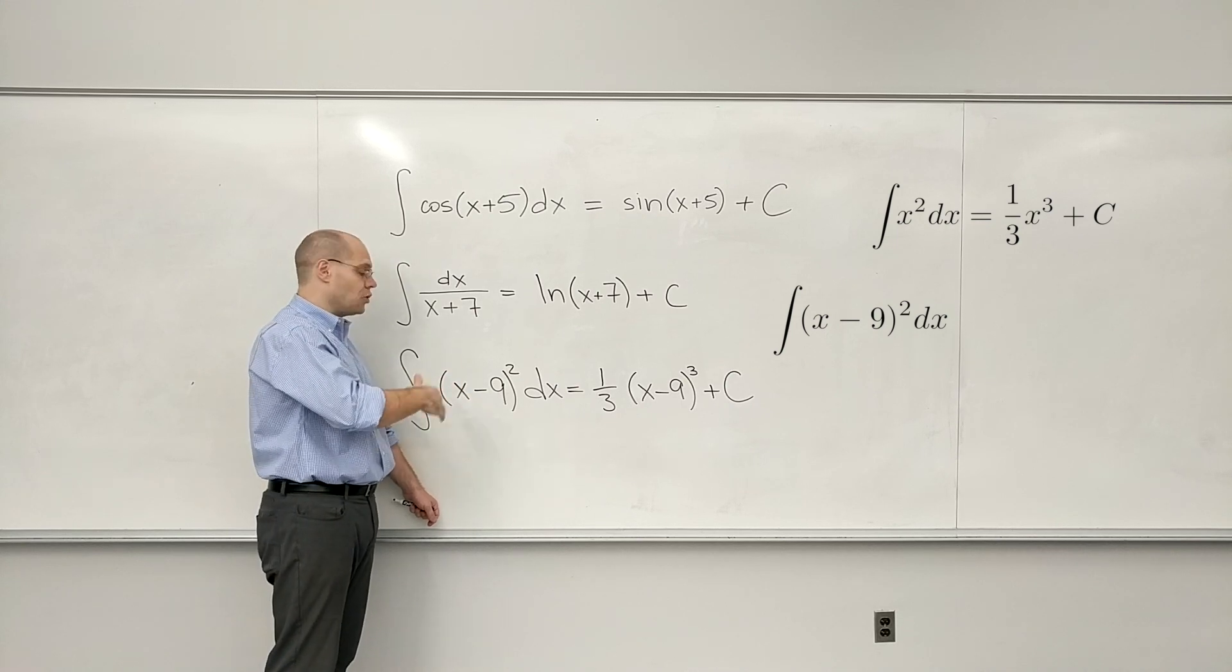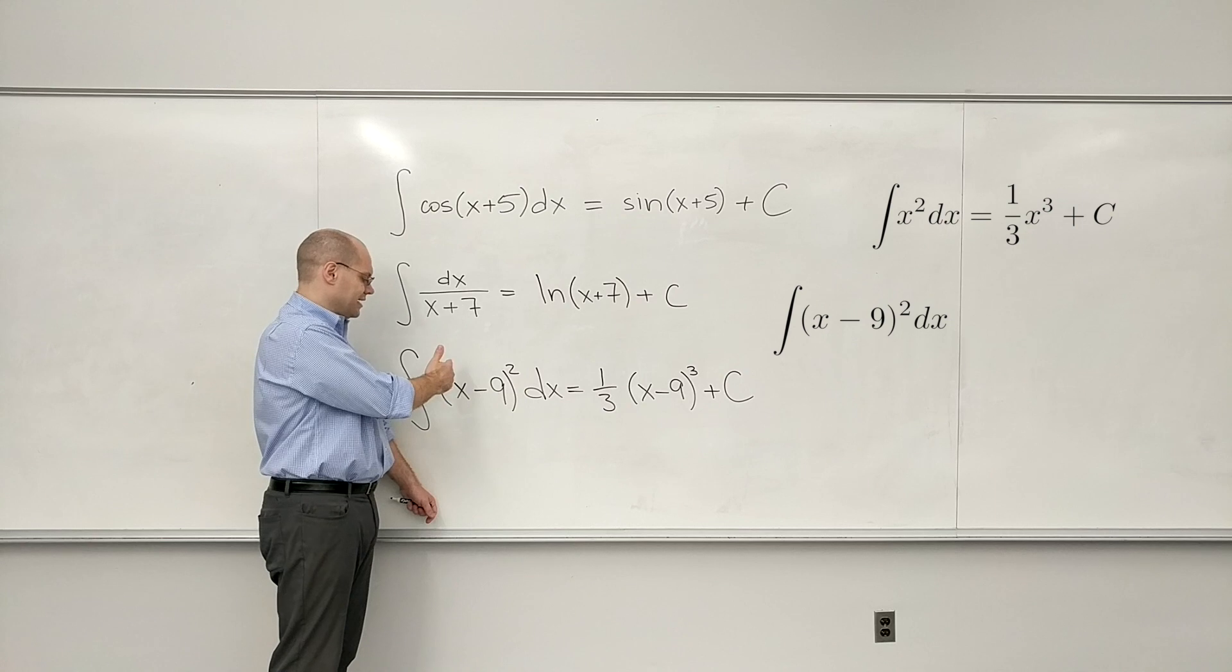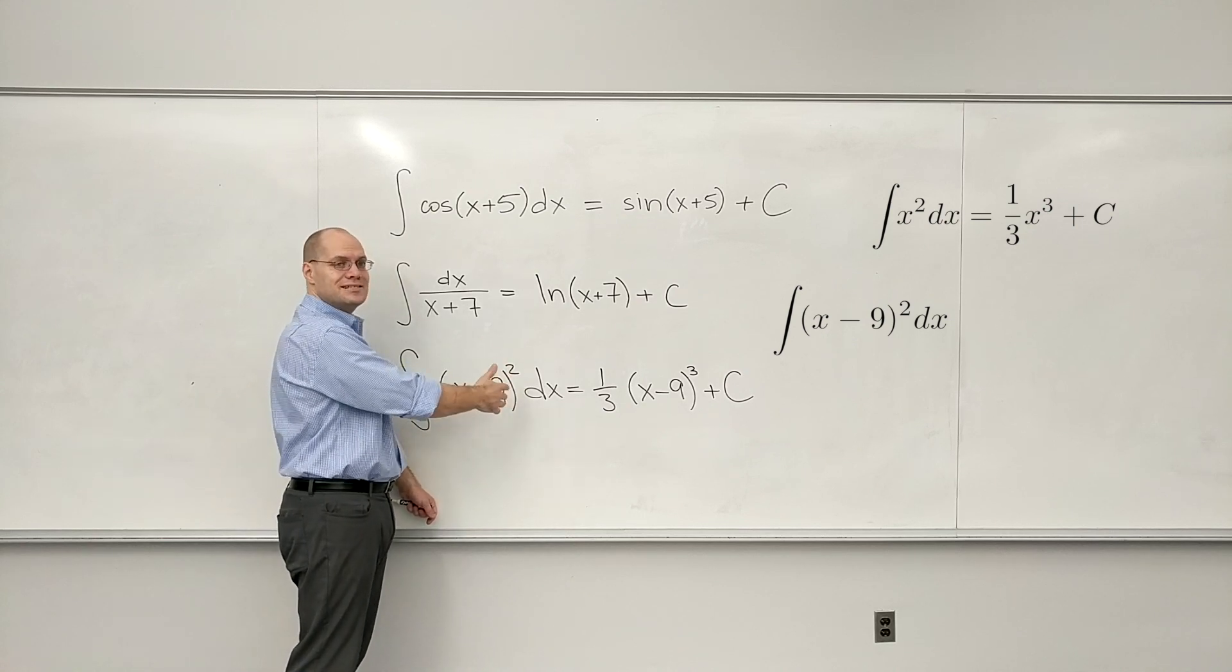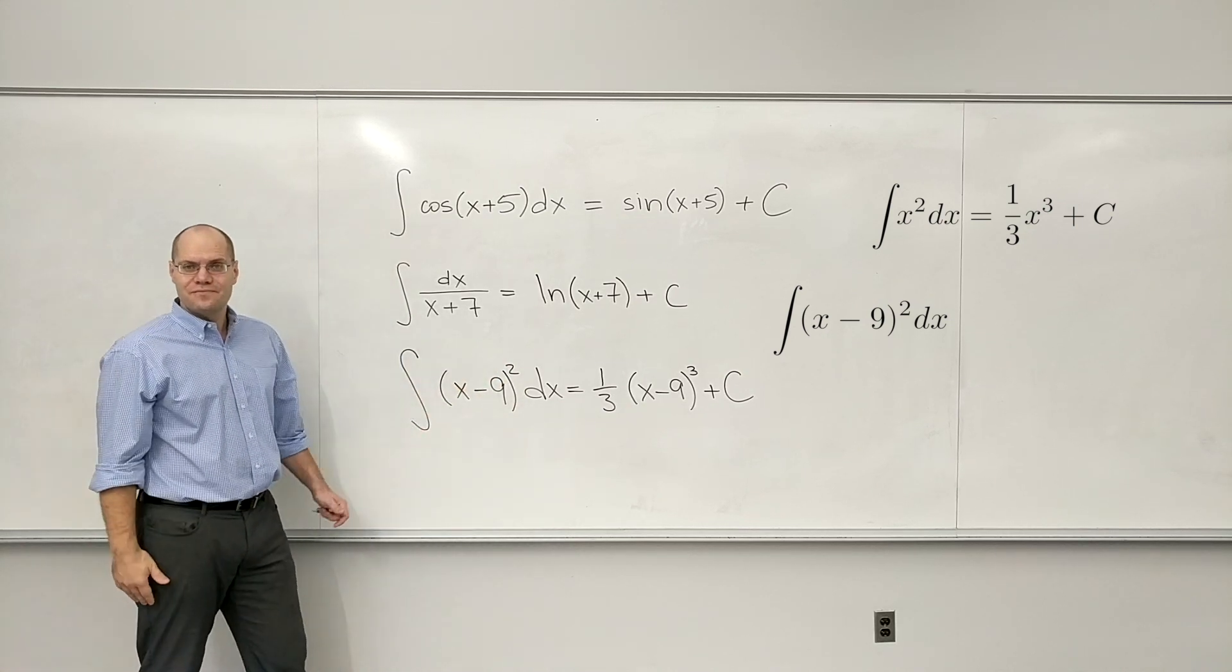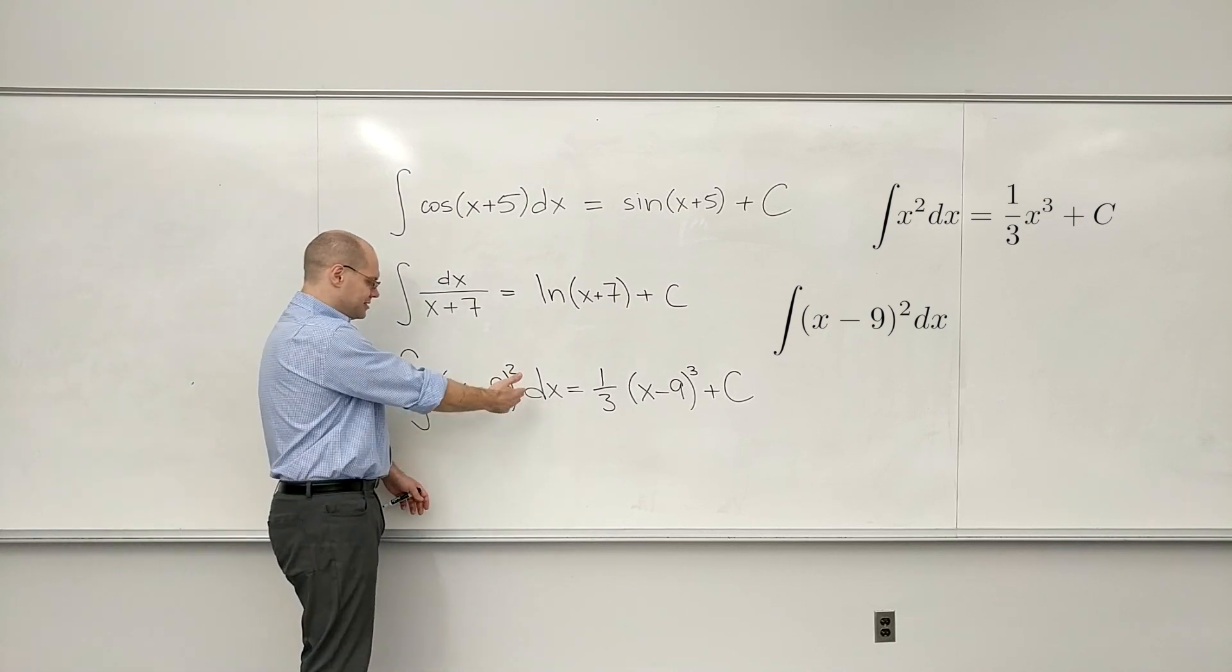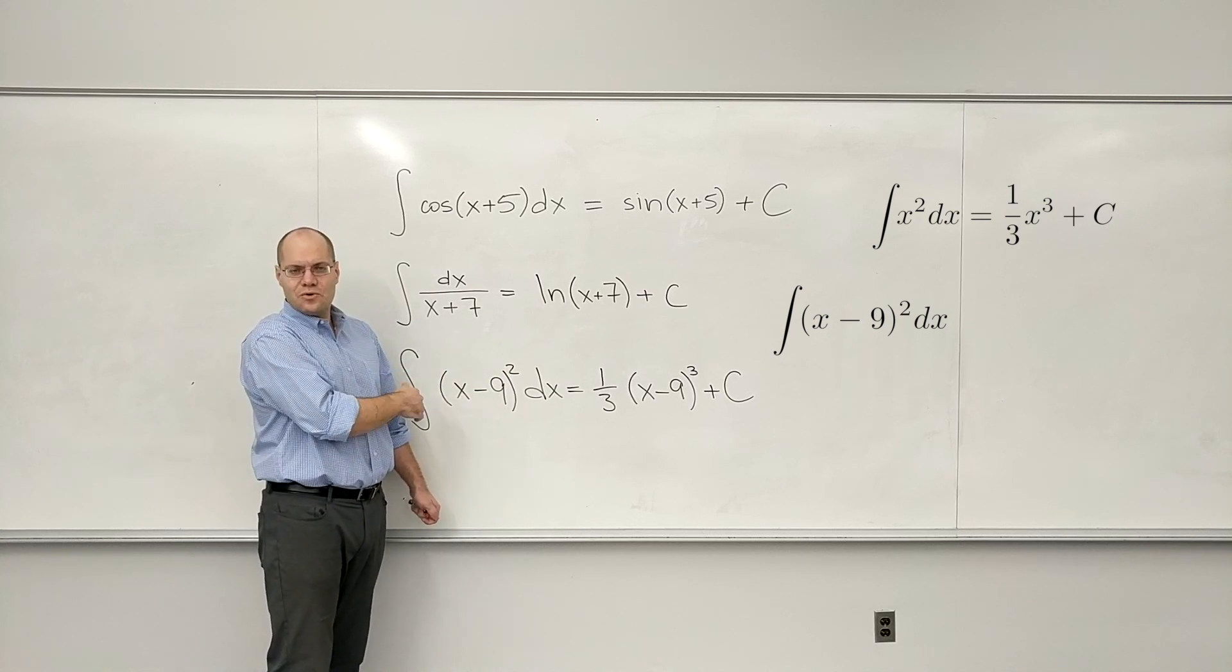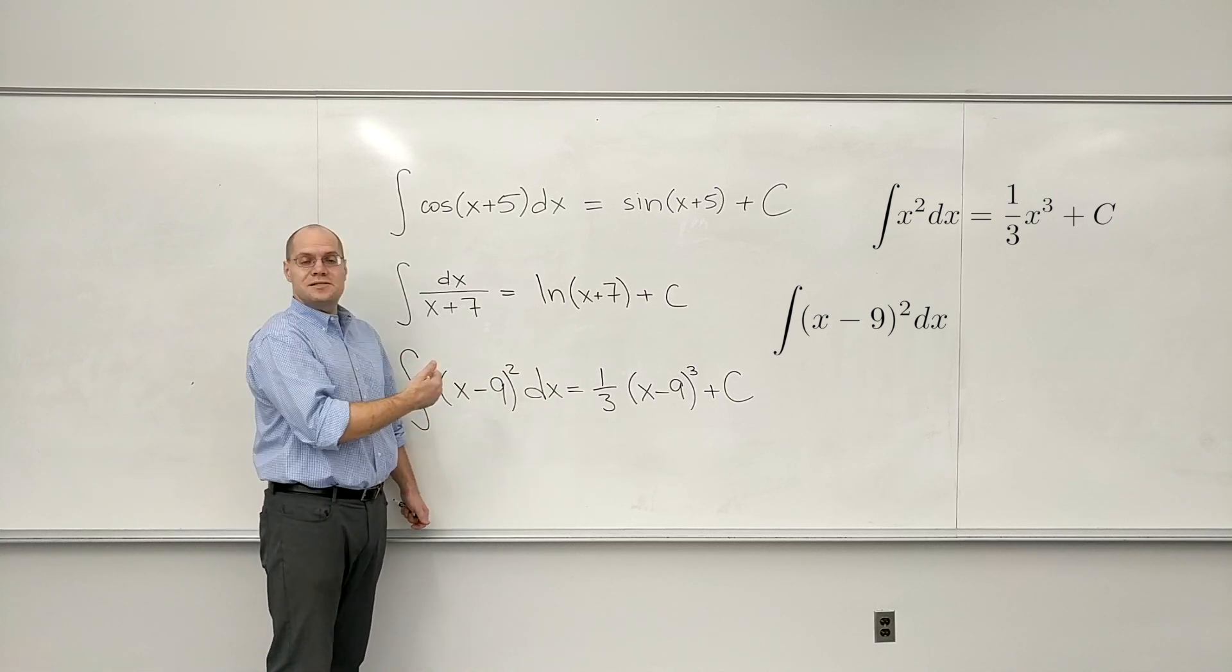And here you see x minus 9 squared. From a certain point of view, it's totally different. Because if you were to multiply this out, you would get x squared minus 18x plus 81. Very different, right? That's on the one hand. But on the other hand, you can just look at this and say, well, it's still something squared. What is that something? Well, it's x minus 9.